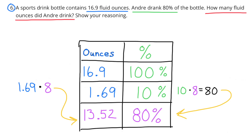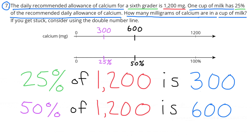1.69 ounces times 8 gives 13.52 ounces. Andre drank 80% of the bottle, which is 13.52 ounces. Number 7: The daily recommended allowance of calcium for a sixth grader is 1,200 milligrams. One cup of milk has 25% of the recommended daily allowance. 100% is 1,200 mg, 50% is 600 mg, and 25% is half of that — 300 mg. There are 300 milligrams of calcium in one cup of milk.